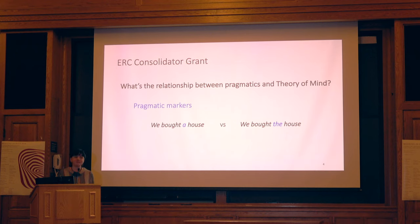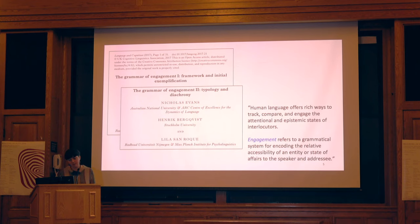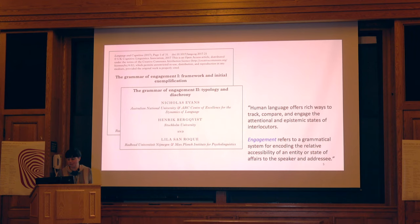Six months after the meeting in Flux, I went to Australia to give a talk at ANU and I met Nick Evans. I happened to be talking about this with the expert in the room. And Nick told me about the work they had just published on the grammar of engagement. They opened the first paper explaining that human language offers rich ways to track, compare, and engage the attentional and epistemic states of interlocutors, defining engagement as a grammatical system for encoding the relative accessibility of an entity or state of affairs to the speaker and addressee.